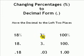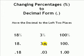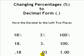With 3%, the decimal is on the right side. We're replacing the percent symbol with a decimal. Move it over 1, 2 places, add the zero, and you have 0.03.